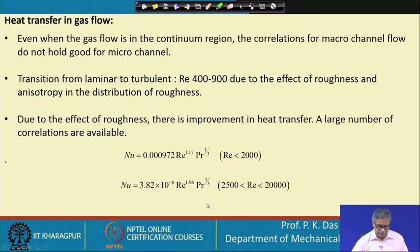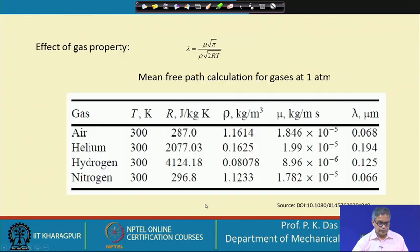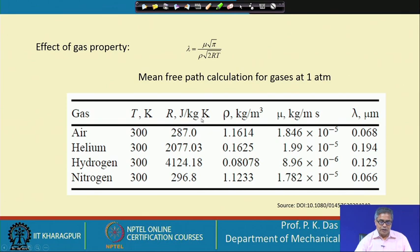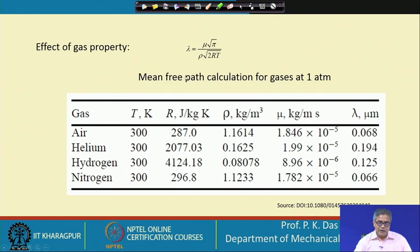Now let us look into the effects of gas properties. The Knudsen number can be defined by gas properties. The basic definition of Knudsen number involves the molecular mean free path and the scale length of the system or problem we are considering. Mean free path is one important parameter of the Knudsen number and is important when dealing with micro-scale heat transfer. The mean free path lambda is given by the formula: lambda = mu times the square root of (pi / rho) divided by the square root of 2RT, where mu is dynamic viscosity, rho is density, R is the gas constant, and T is temperature.